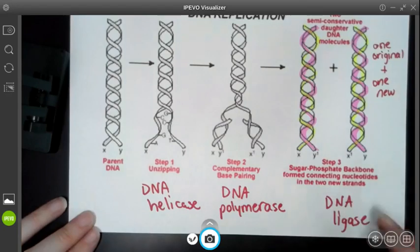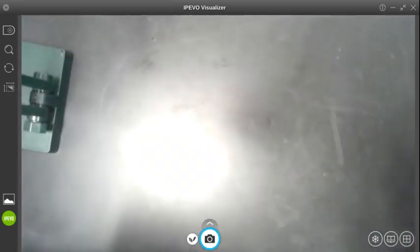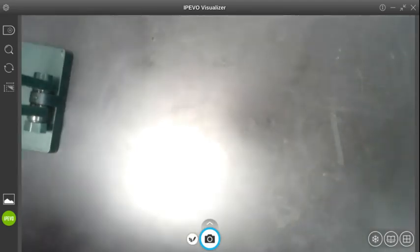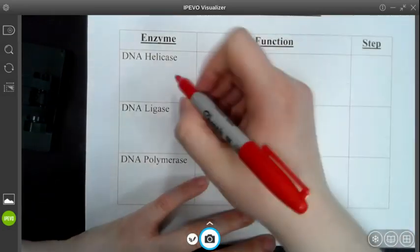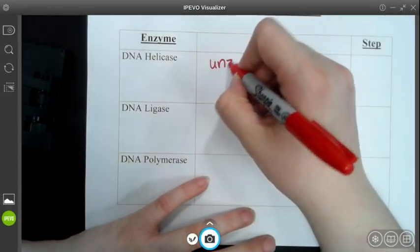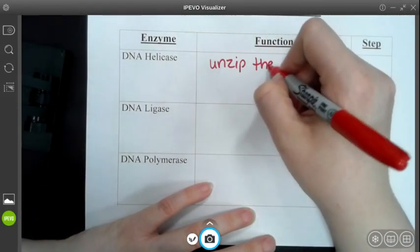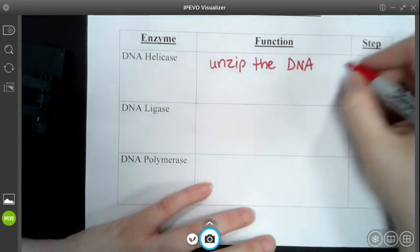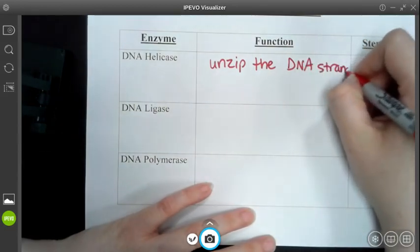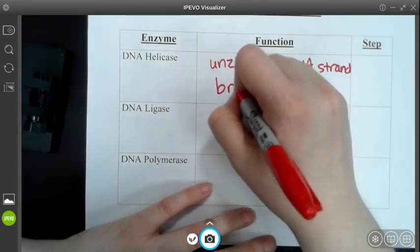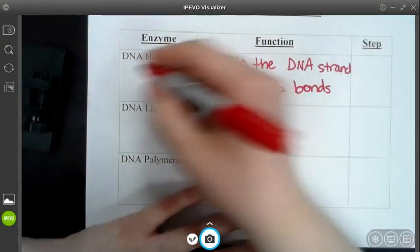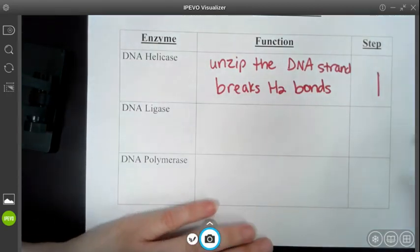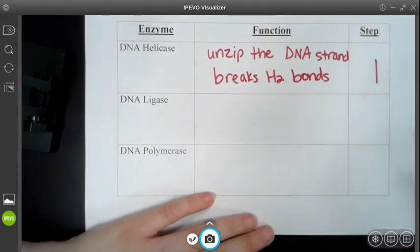So that was just a quick look at DNA replication. Now I want to go ahead and talk about the enzymes involved in DNA replication. So DNA helicase, the whole purpose of this, is going to unzip the DNA strand. And how it does this is it actually breaks the hydrogen bonds. And DNA helicase is involved in step one of DNA replication.